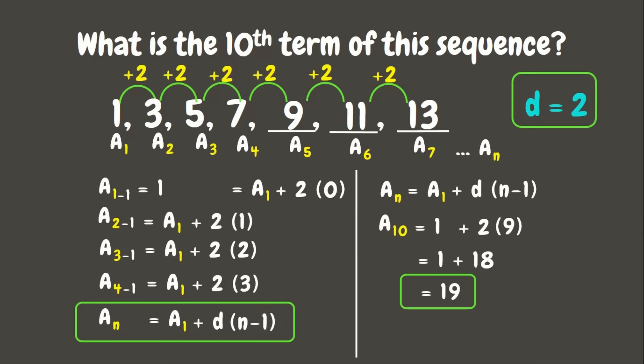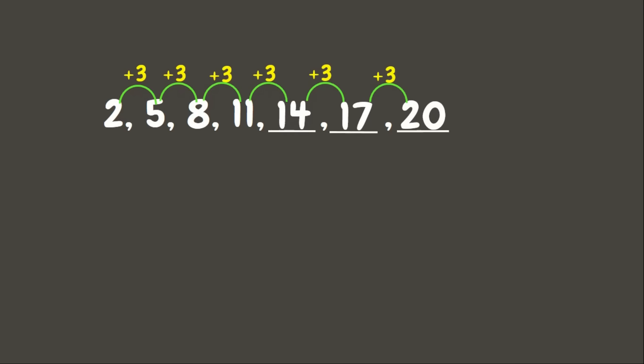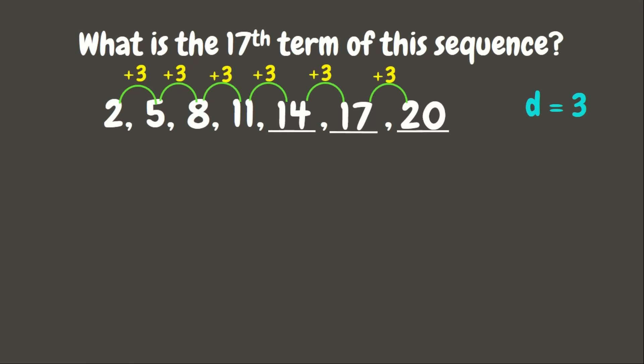Let's have another example. This time we have the sequence 2, 5, 8, and 11. We can see that if we add 3 to each term we get the next: 2+3=5, 5+3=8, 8+3=11. The next terms would be 14, 17, and 20. The common difference is 3. Since this sequence has a common difference, we can use our nth term rule to get the 17th term.